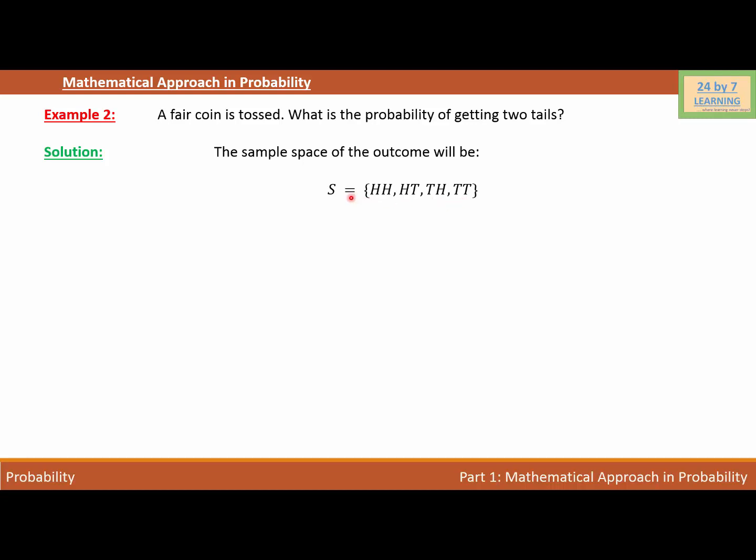As you can see, we have four different outcomes if we toss a coin twice. Now let's look at the question once again. We have to find the probability of getting two tails. Out of these sample spaces, there's only one sample space that has both tails.